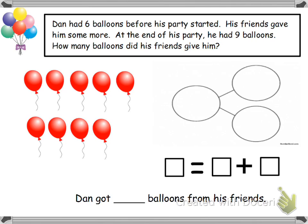Now, whenever we have word problems, we know that we are going to read through our problems three times. We know the first two times is just for us to have a clear understanding of what the word problem is telling us and asking us. And then the third time that we read it is to really circle our numbers and to truly understand exactly how we need to solve it.